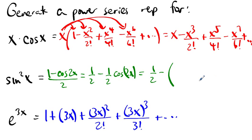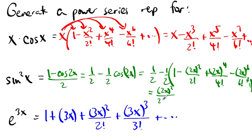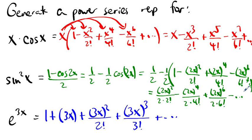So sin²x = 1/2 − (1/2)·cos(2x). You open parentheses and get cos(2x) by substituting 2x everywhere in the cosine series. The 1/2 and negative 1/2 simplify nicely — minus minus becomes plus — giving: (2x)²/(2·2!) − (2x)⁴/(2·4!) + (2x)⁶/(2·6!) − ... You could come up with a general term if you really wanted to.